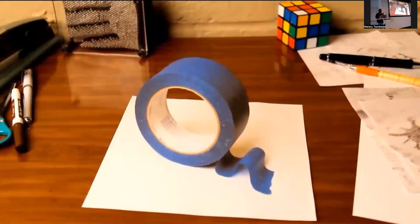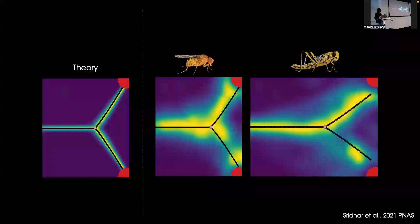Indeed, when we do these experiments with flies and locusts, as predicted by our theory, we find that both the flies and locusts exhibit this bifurcation.